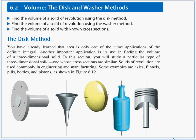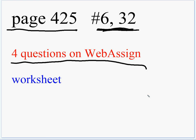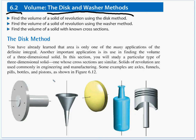Hello and welcome to another calc video. In this one we're going to be looking at three-dimensional volume in section 6.2 — the disk and washer methods. The assignment covers page 425 in the textbook, four questions on WebAssign, and a worksheet. The learning objectives are: find the volume of a solid using the disk method, find the volume of a solid of revolution with the washer method, and find the volume of a solid with known cross sections.